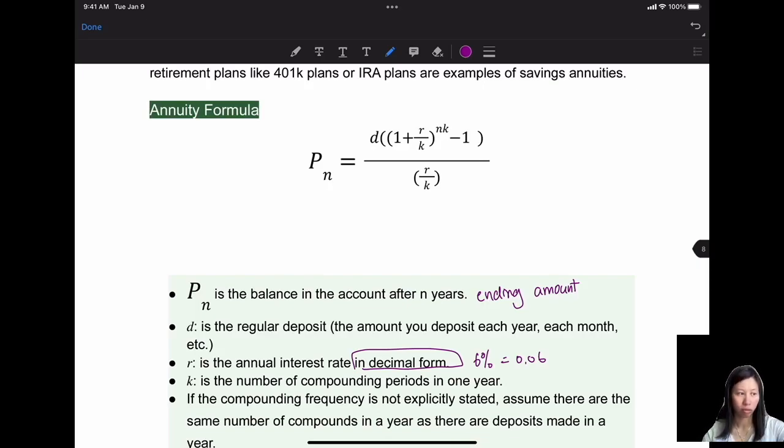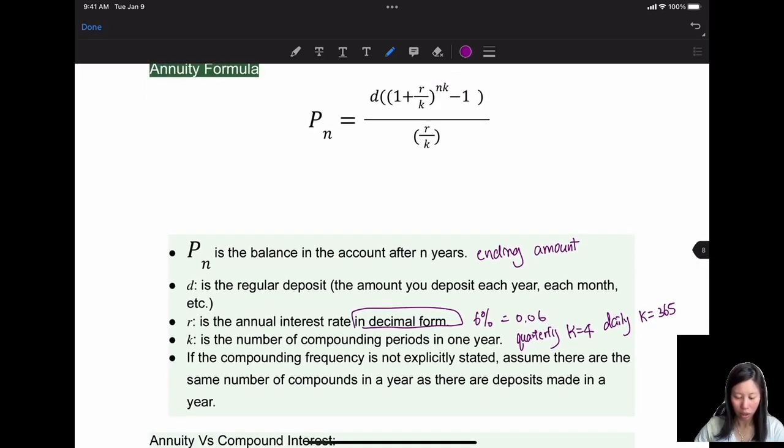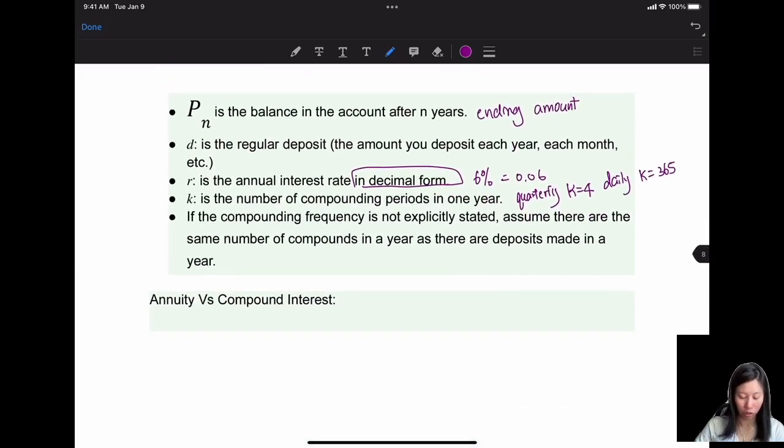K is the number of compound periods in a year. So we talked about that. If you compound quarterly, K is equal to 4. If you compound daily, you're going to compound it 365 times in a year.